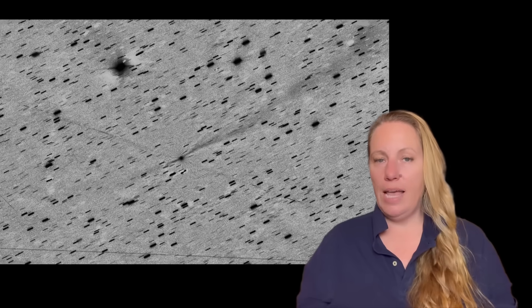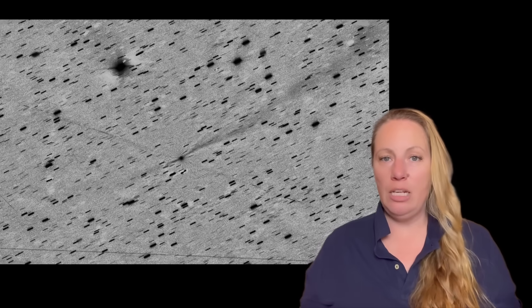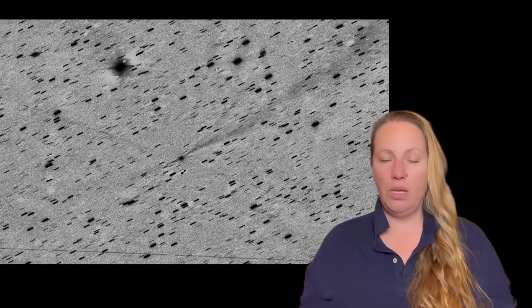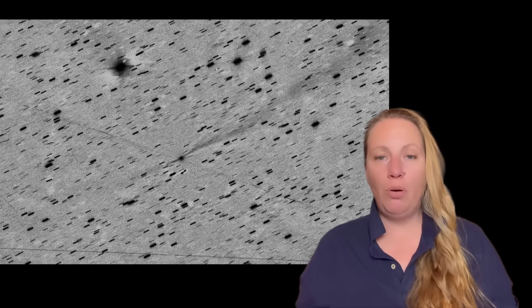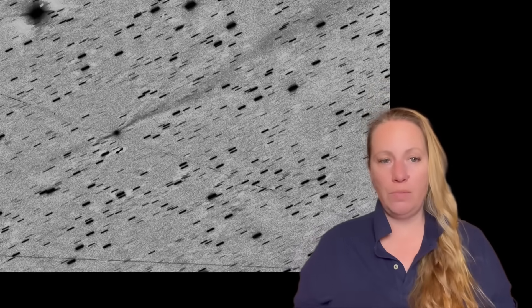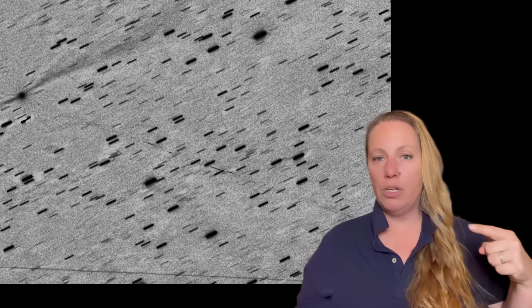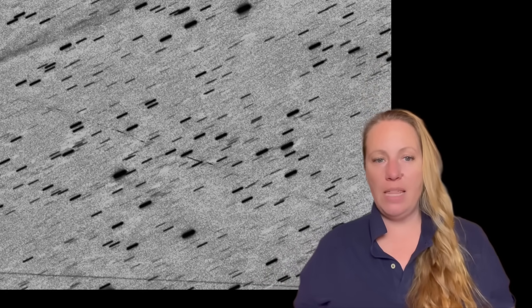But if the sideways lines are real and they're not satellites, which we can't rule out because we do not have any proof for any of these theories, then two big problems would appear. The lines are too straight and too smooth because 3i Atlas rotates every 16 hours, so the lines can't be that straight.